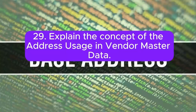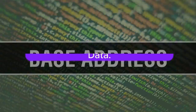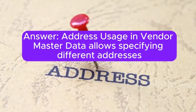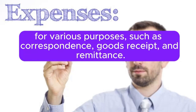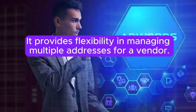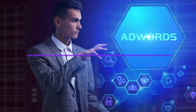29. Explain the concept of the address usage in Vendor Master Data. Answer: Address usage in Vendor Master Data allows specifying different addresses for various purposes, such as correspondence, goods receipt, and remittance. It provides flexibility in managing multiple addresses for a vendor.